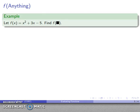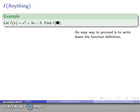For example, I can find f of x equals x squared plus 2x minus 5, find f of black square. How do I do this? Well, here's an easy way to proceed. We can write down our function definition, paper is cheap. So there's no reason not to write down our function, x squared plus 2x minus 5, even though it's in the problem, just write it down.